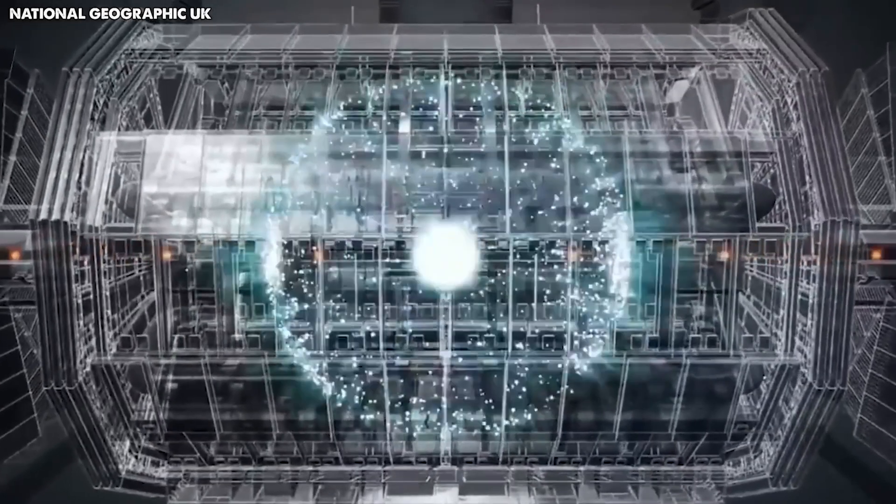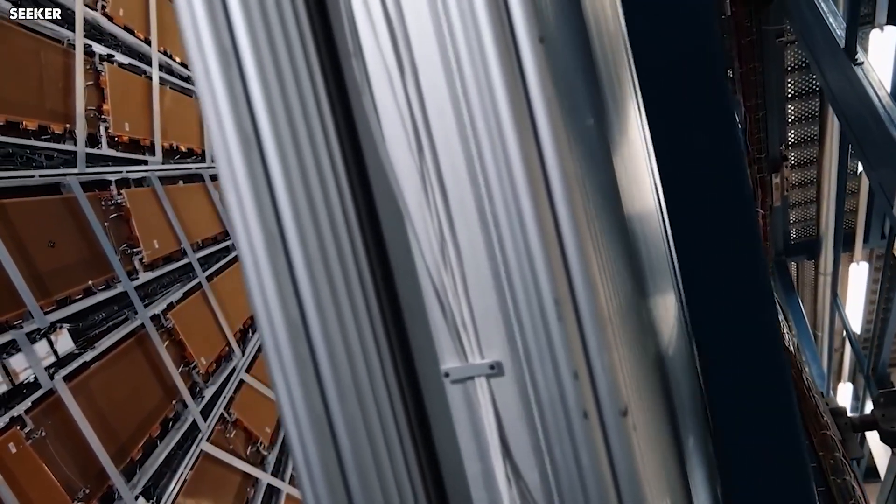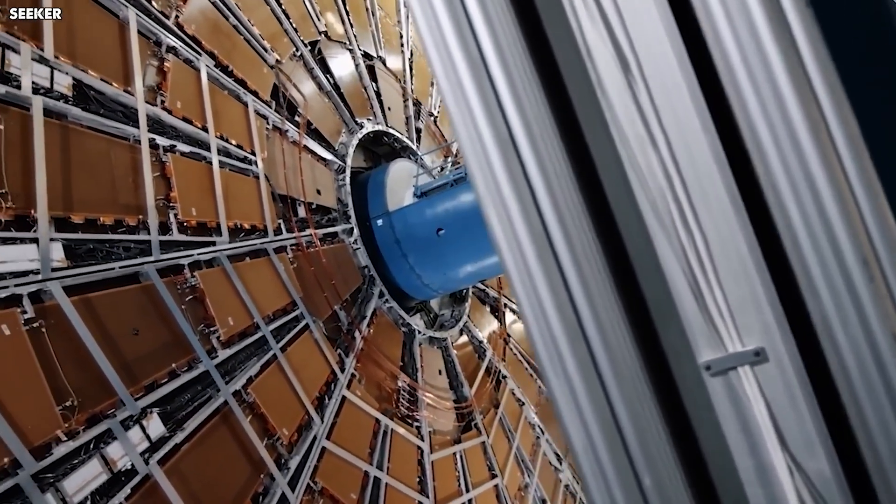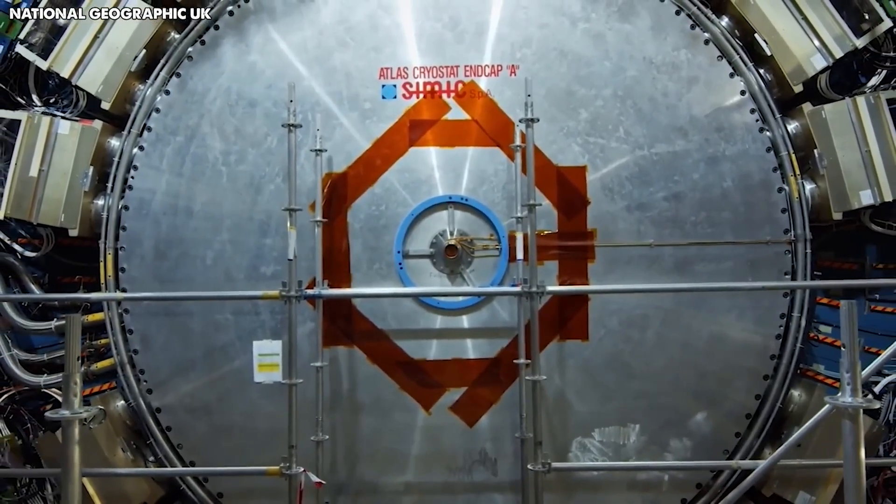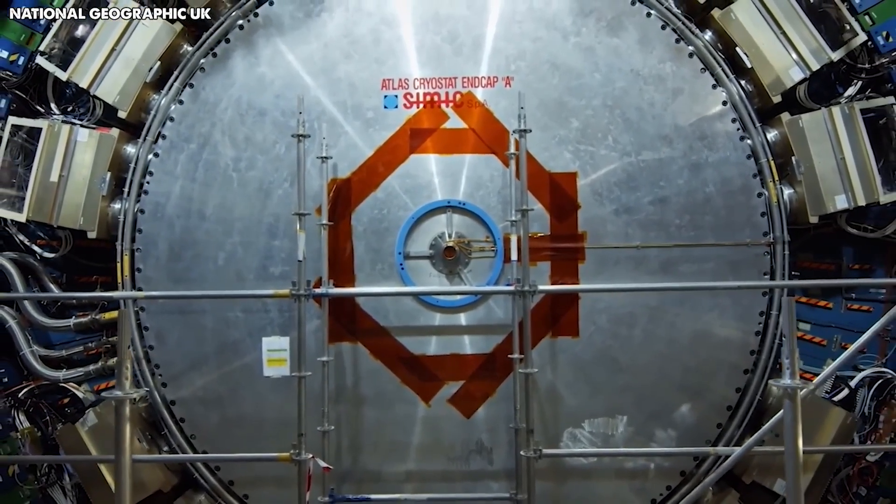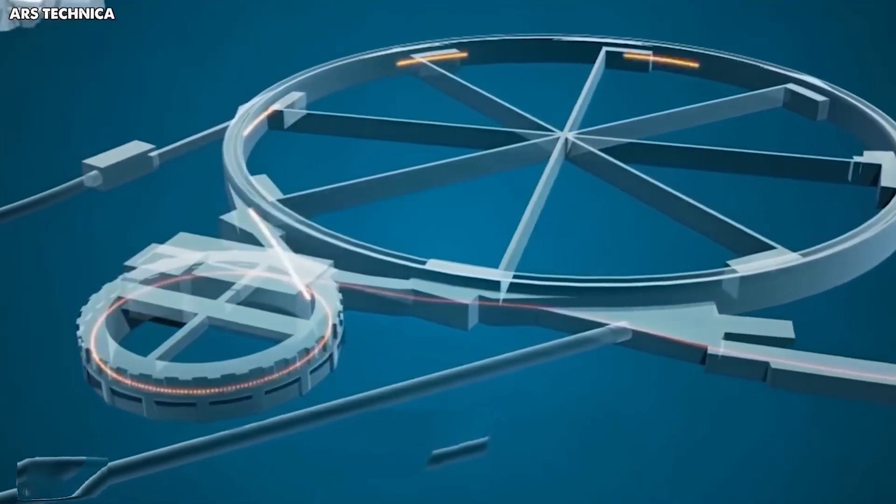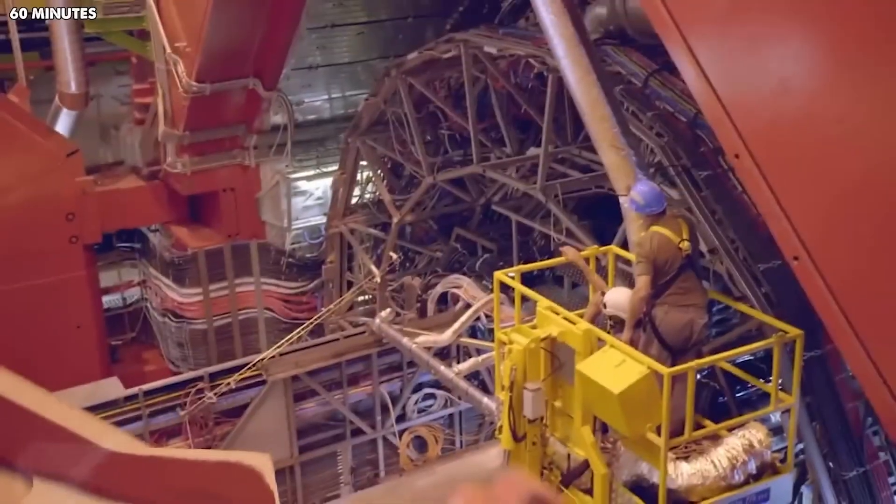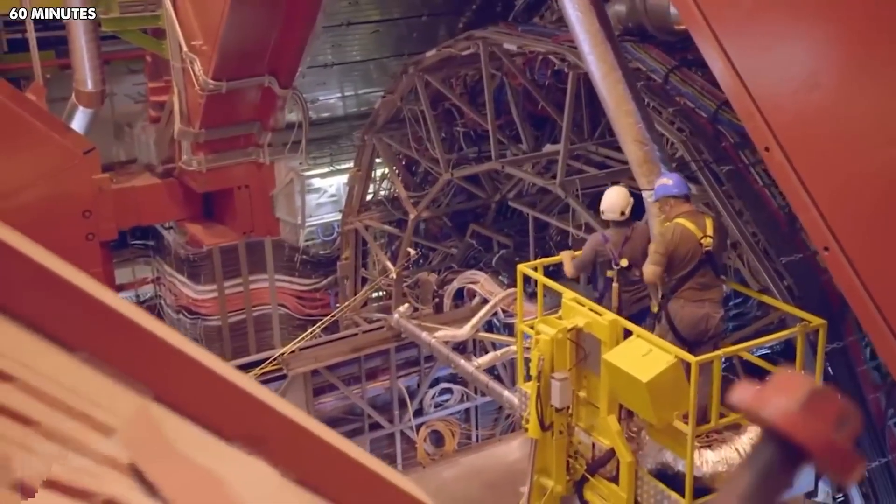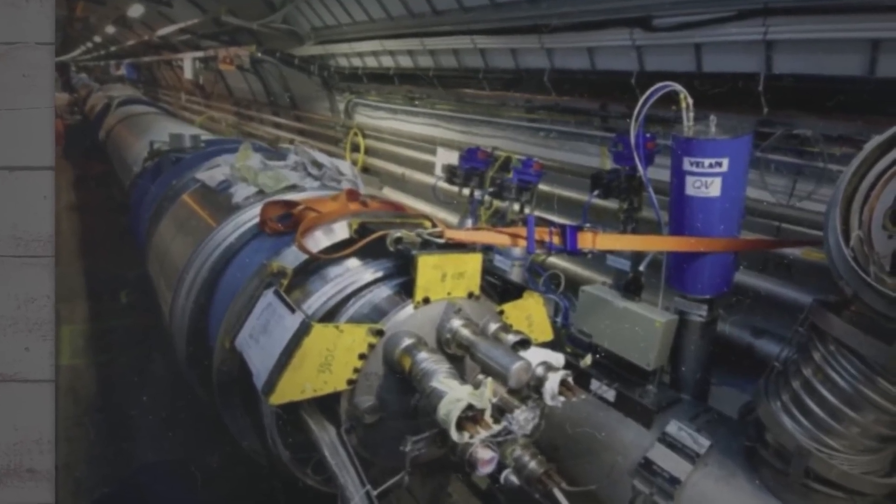These results are already paving the way for next generation particle colliders. If you think the LHC is big, wait until you see what's next. The LHC is getting a massive upgrade to the high-luminosity LHC, which will give us 10 times more data to hunt for things like dark matter. And after that, CERN is planning the Future Circular Collider, a proposed 56-mile ring that will be 7 times more powerful than the LHC. I can't even imagine what we're going to find with that. The LHC pushed the limits of what we thought was possible, but the show is just beginning.